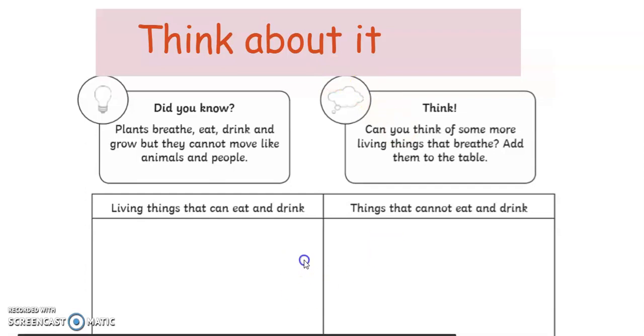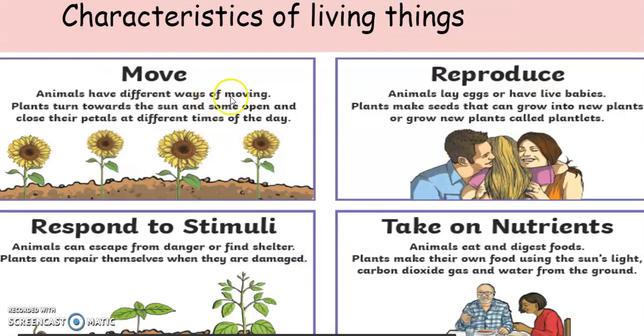You need to think about all of this. In order to differentiate between living and non-living things, you need to know the characteristics of living things. Living things move. Animals have different ways of moving, the same for plants.